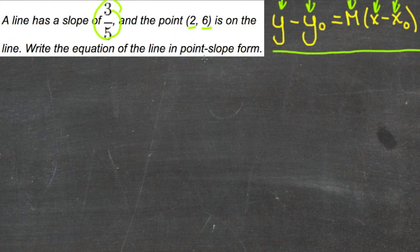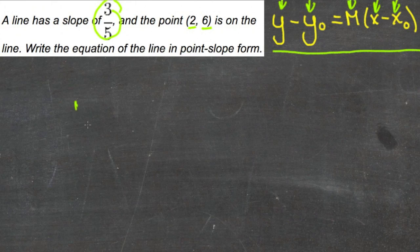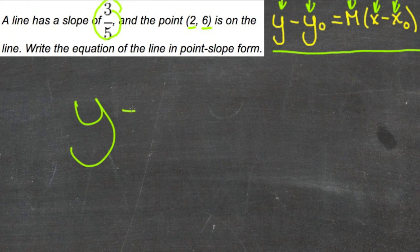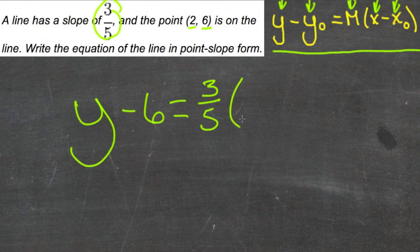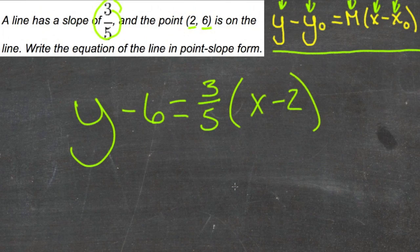So we'll just plug those pieces in, substitute them in for y₀, x₀, and m and we'll be done. So we have y minus the y-coordinate 6 equals 3/5, which is our m, times x minus 2, which is the x-coordinate. And we're done.